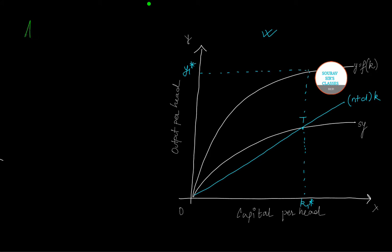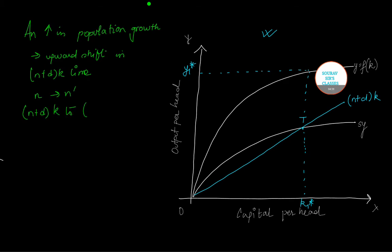Similarly I'll use another ink and I'll draw another. Let me write first—an increase in population growth will actually cause upward shift in (n+δ)k line. So let us do this here in the figure.